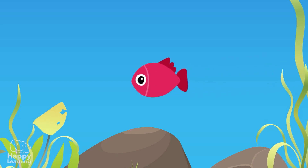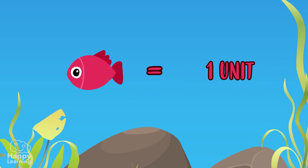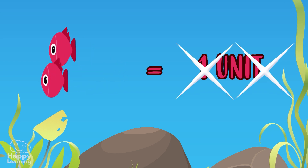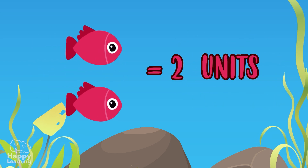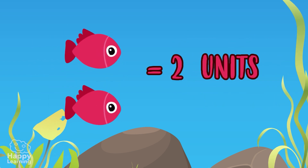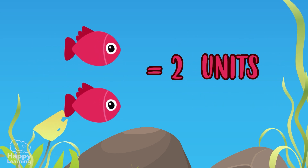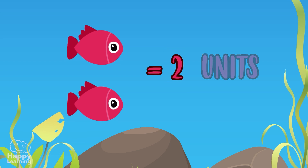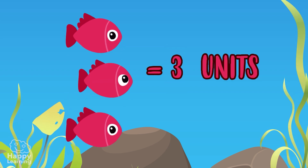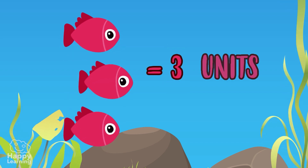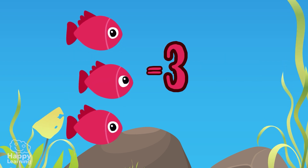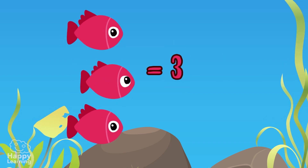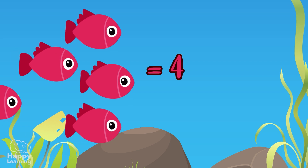One fish is equal to one unit. So if we have two units, we represent them with the number two. Three units with the number three. And so on, up until the number nine.